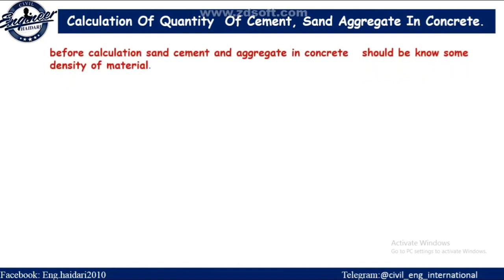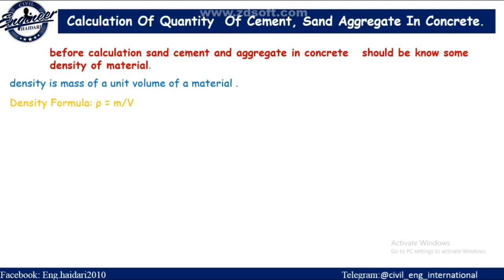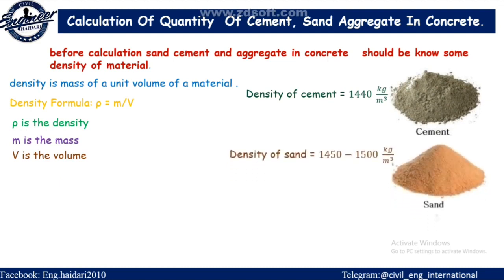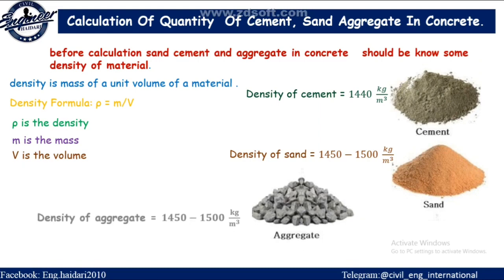Before calculating sand, cement, and aggregate in concrete, you should know the density of each material. Density is the mass of a unit volume of a material. Density formula: ρ = M/V, where ρ is density, M is mass, and V is volume. Density of cement = 1440 kg/m³. Density of sand = 1450 to 1500 kg/m³. Density of aggregate = 1450 to 1500 kg/m³.